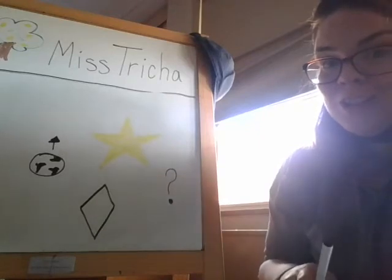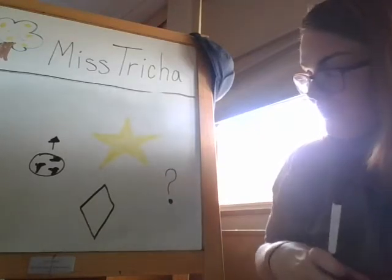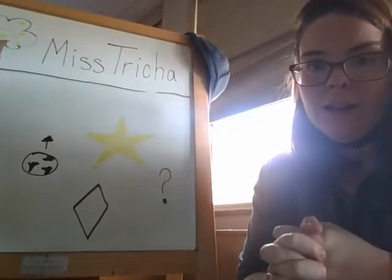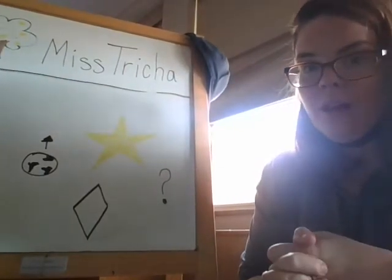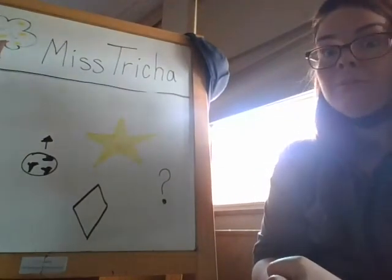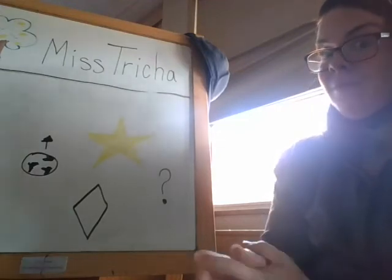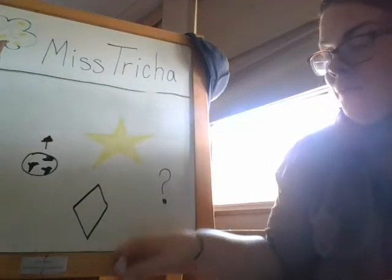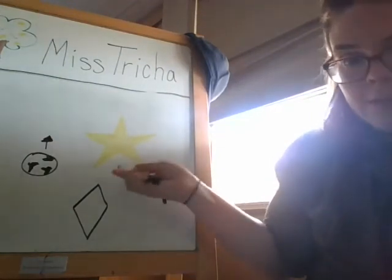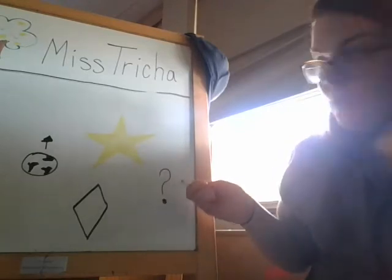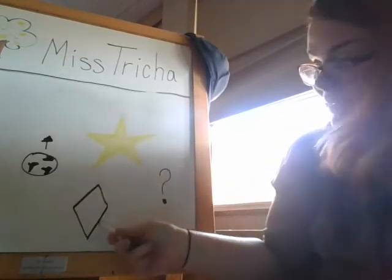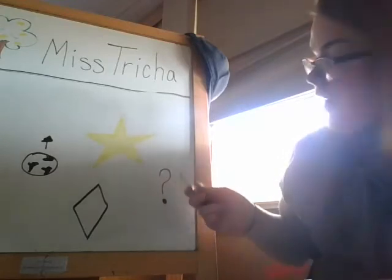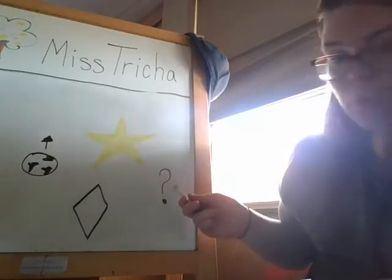Good job, boys and girls. This time, how about we try singing it really fast. Are you ready? Let's try to stay together. Here we go. Twinkle, twinkle, little star. How I wonder what you are. Up above the world so high. Like a diamond in the sky. Twinkle, twinkle, little star. How I wonder what you are. Good job.